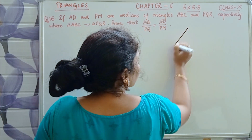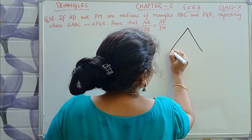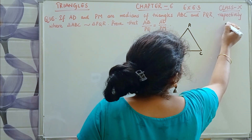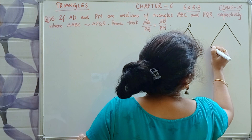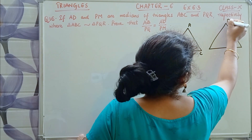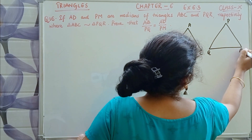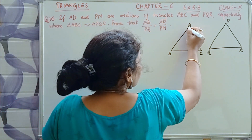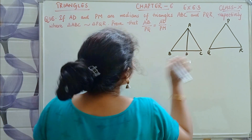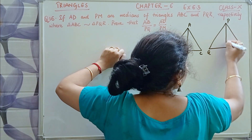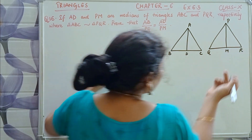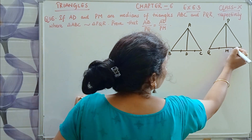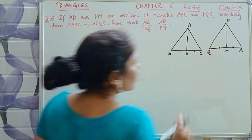So let's make the diagram. This is triangle ABC, and here we make triangle PQR. AD is the median of triangle ABC, and PM is the median of triangle PQR. Since AD is a median, D is the midpoint of BC; similarly M is the midpoint of QR. So BD equals DC and QM equals MR.